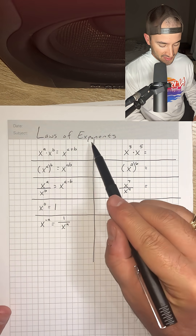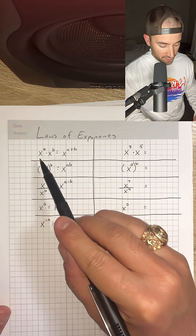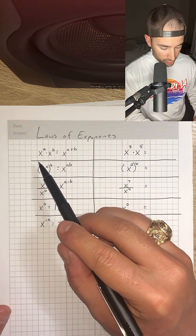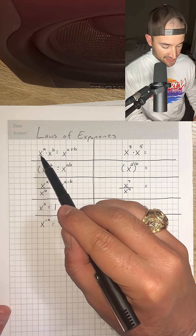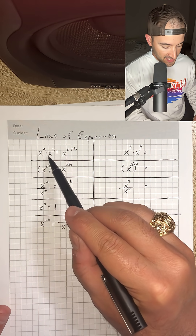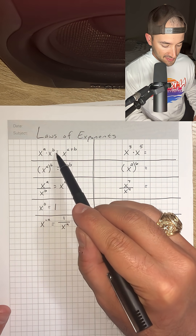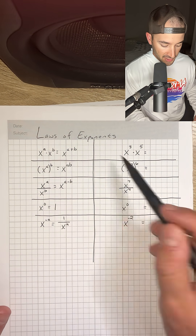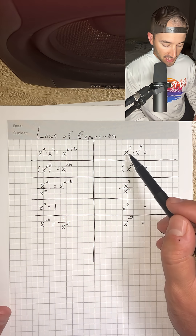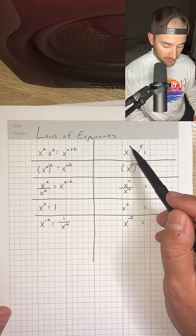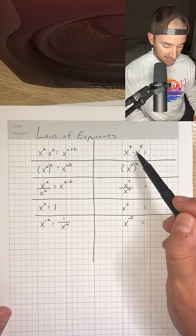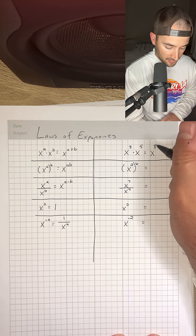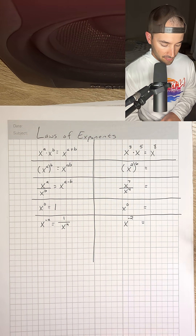We're talking about the laws of exponents, and the first one is the product rule, which says that x to the a times x to the b is equal to x to the a plus b. For example, if we have x to the third power times x to the fifth power, that would be equal to x to the eighth power.